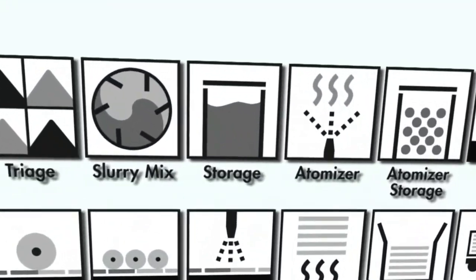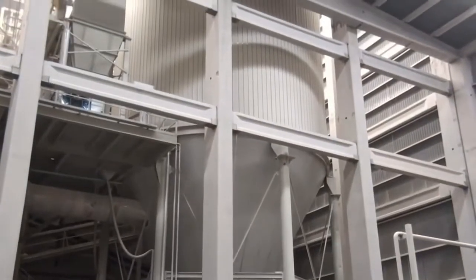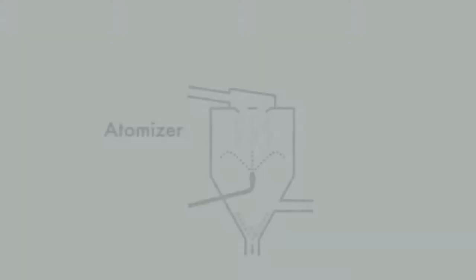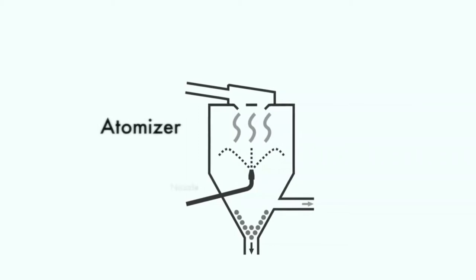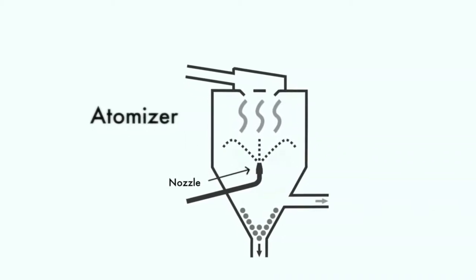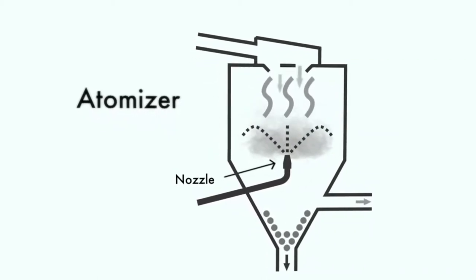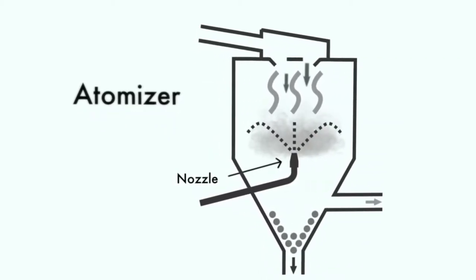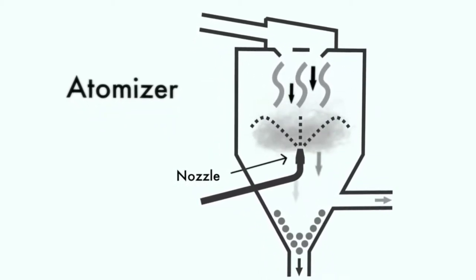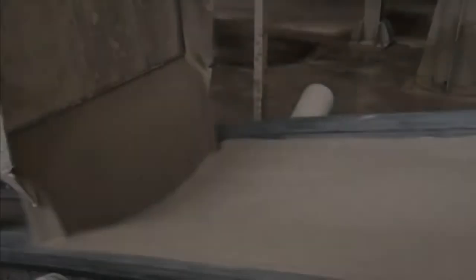The slurry is then transferred to large underground storage tanks, then fed into an atomizer. The atomizer is equipped with a nozzle that sprays the slurry into the middle of a large tank fed with a current of hot air. As the slurry becomes airborne, it rapidly dries to form atomized powder.